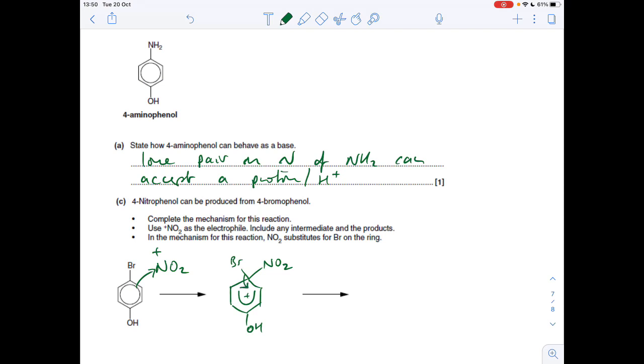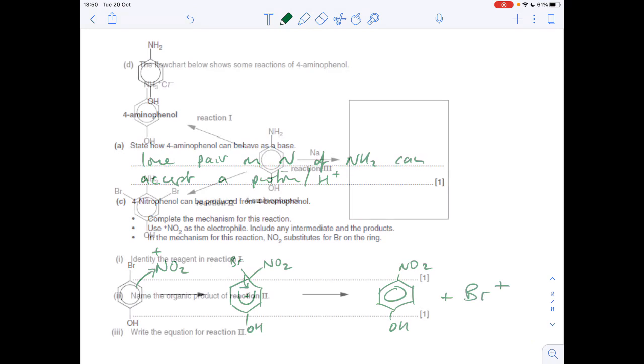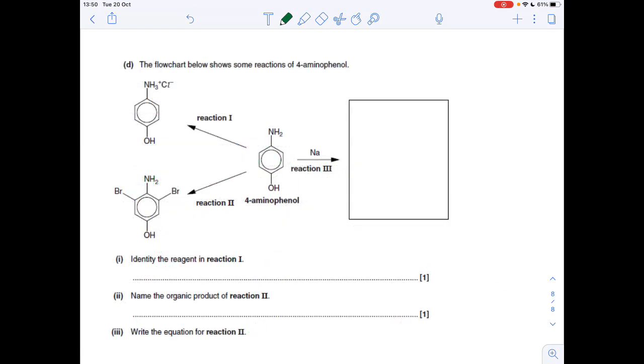And then we need to bring a curly arrow to lose that Br. So we get the NO2 there. The OH there. And we're going to get a Br plus ion. Next part of the question. We've got this flow chart. So the first thing we'll do is identify the reagent in reaction 1.